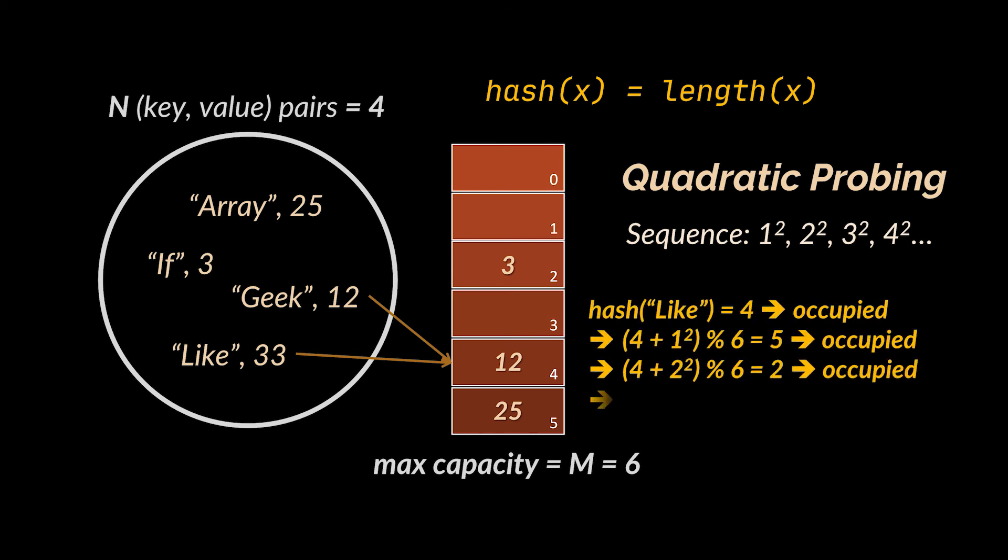In our example, the 1 squared polynomial will lead to an index 5 which is taken, and 2 squared will result in index 2 also occupied. However, adding the 3 to the power 2 polynomial will help us find a new index which is 1 in this example.